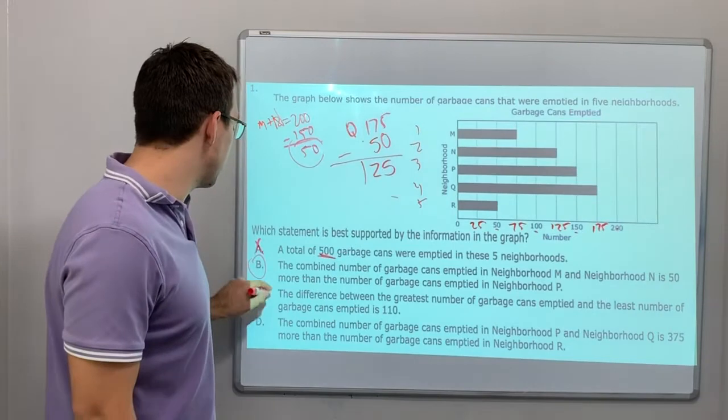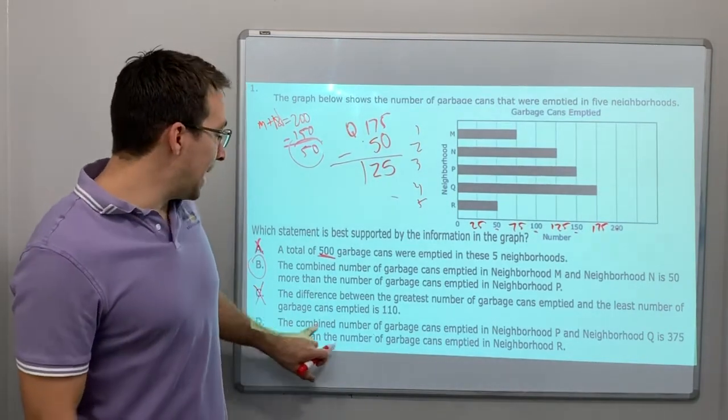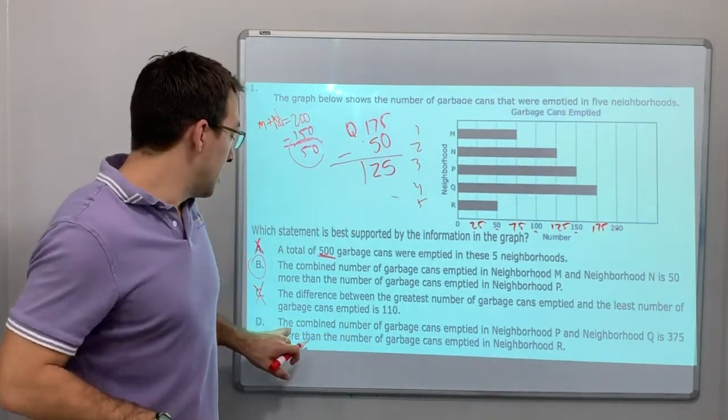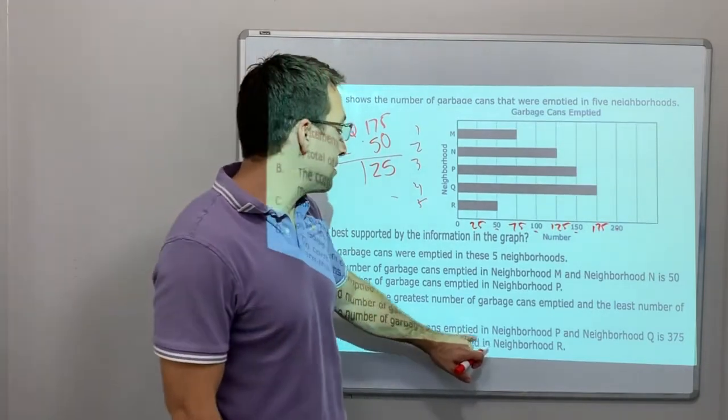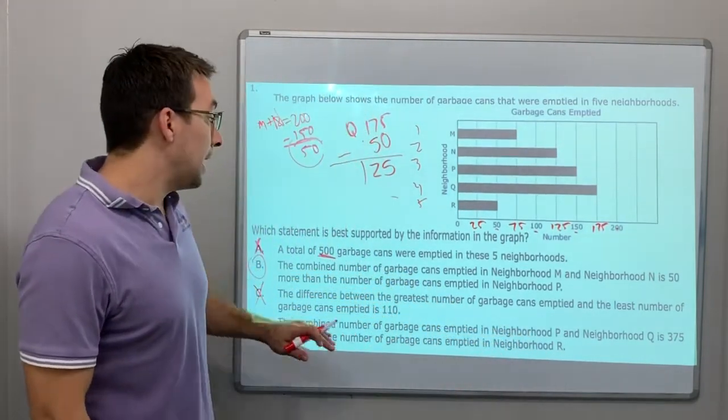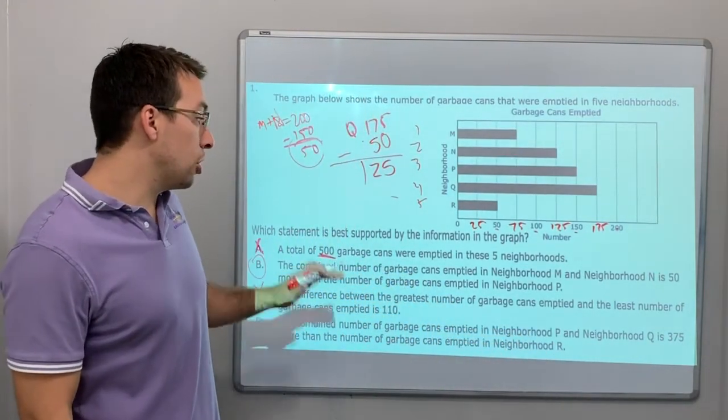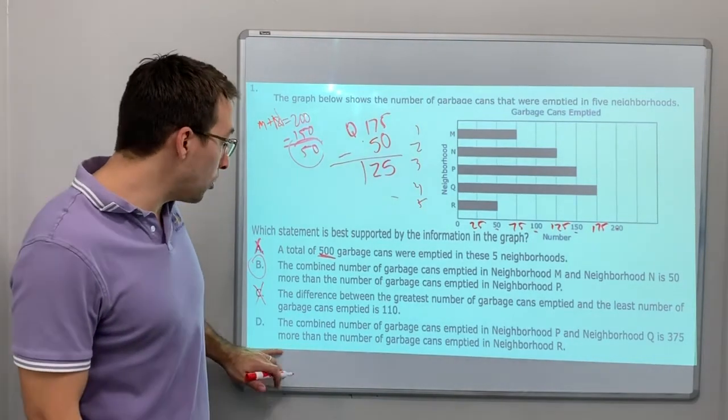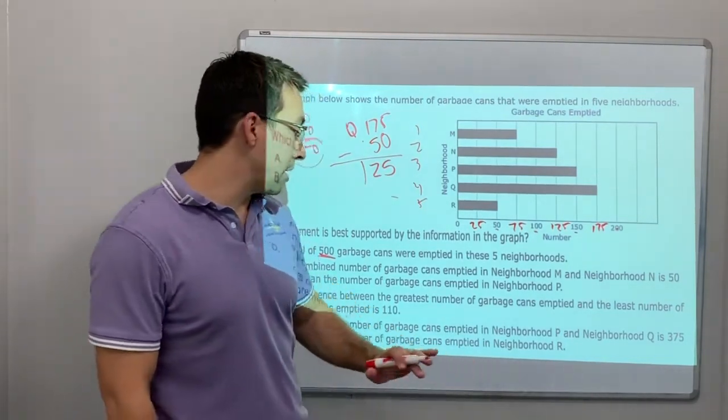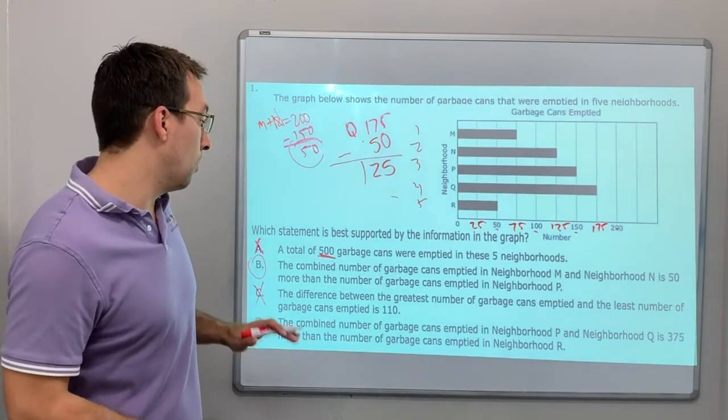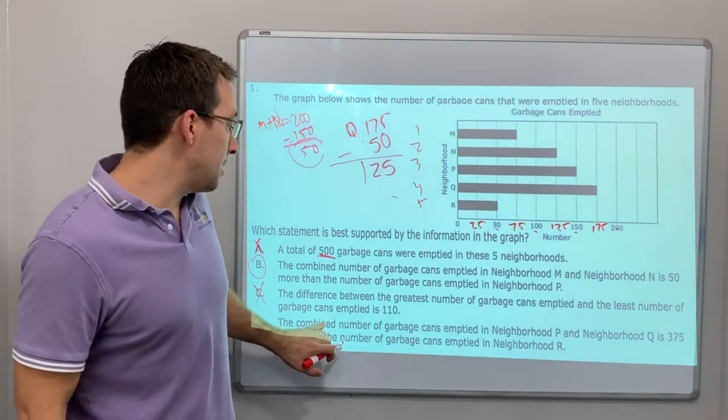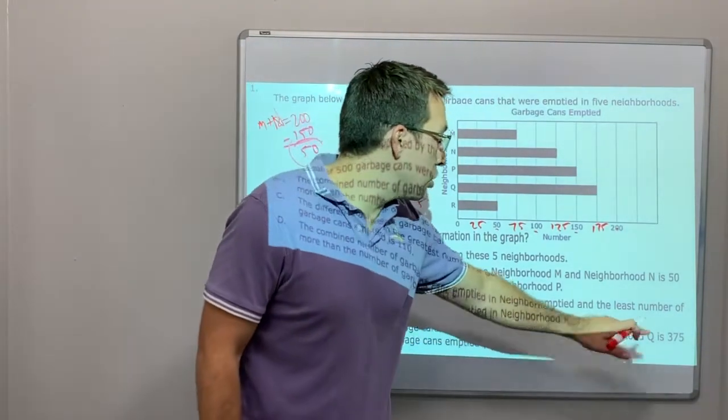No, that is 110. No, it's 125. The combined, so that's adding, right? The combined number of garbage cans emptied in neighborhood P and neighborhood Q is 375 more than the number of garbage cans emptied in neighborhood R. Whoa, combined between neighborhood P and Q.